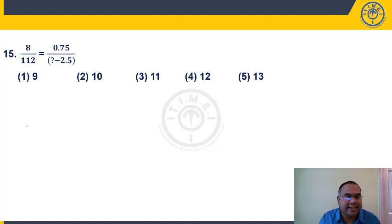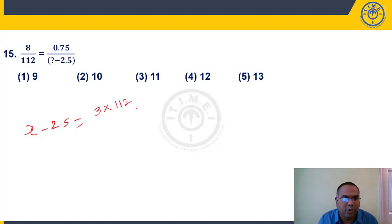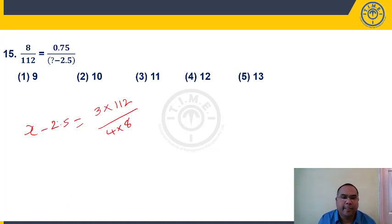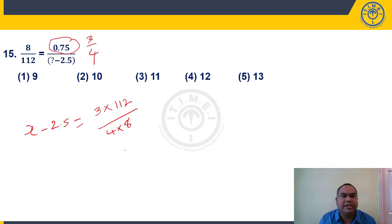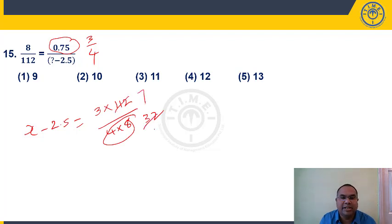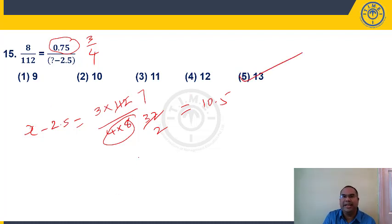Question 15: x − 2.5 = 0.75 × (112/8) × (3/4)... working through: 0.75 = 3/4, then (3/4) × (112/32) = 3 × 112 / 128 = 336/128 = 21/8 = 2.625... simplifying to 10.5. Then 10.5 + 2.5 = 13. Answer: 13.